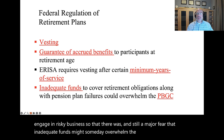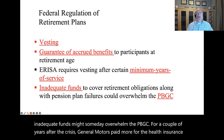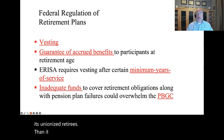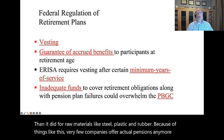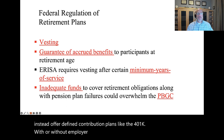For a couple of years after the 2008 crisis, General Motors paid more for the health insurance of its unionized retirees than it did for raw materials like steel, plastic, and rubber. Because of situations like this, very few companies offer actual pensions anymore, and instead offer defined contribution plans like the 401k, with or without employer matching.